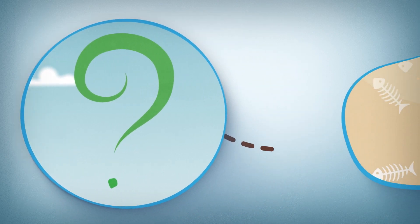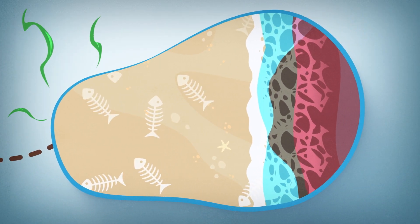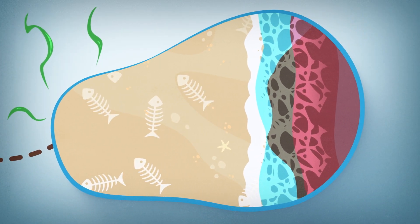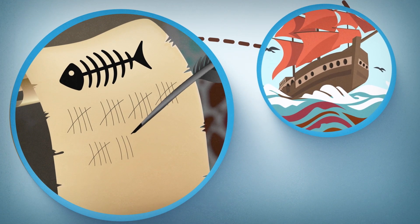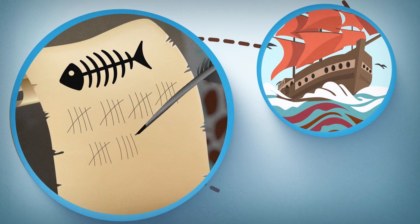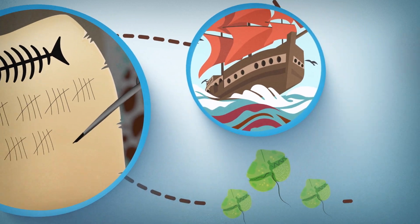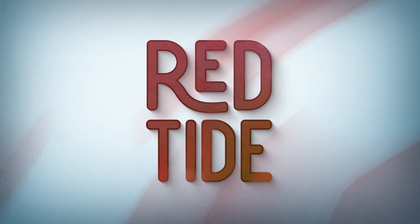Reports dating back to the mid-1800s circulated about peculiar odors and wildlife mortality in unusually colored water. Even earlier, Native Americans like the Timacua and Spanish explorers passing through the Gulf of Mexico documented large fish kills that might have been caused by an algae we now call red tide.